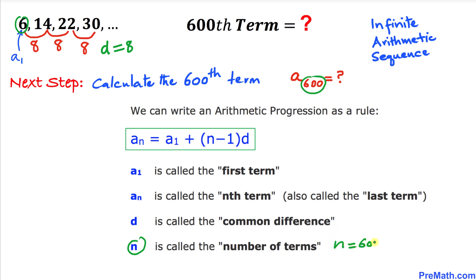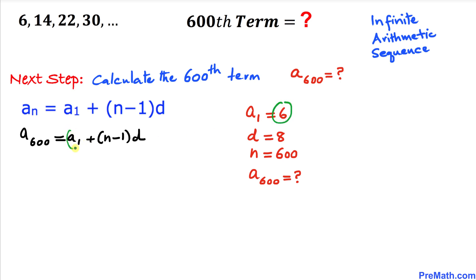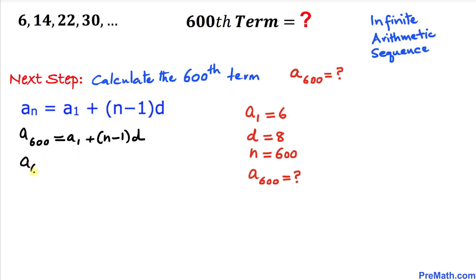So with n equal to 600, let's go ahead and fill in the blanks of the formula. We want to calculate a of 600, so a sub n becomes a sub 600. That equals a sub 1, plus (n minus 1) times d. Our a sub 1 is 6, our n is 600, and our d is 8.